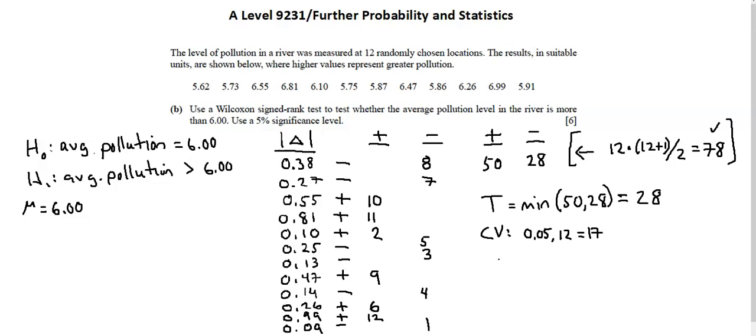And my comparison is between the test statistic of 28, the critical value of 17. 28 is greater than 17. In this test, the conclusion or the result is that we do not reject the null hypothesis.